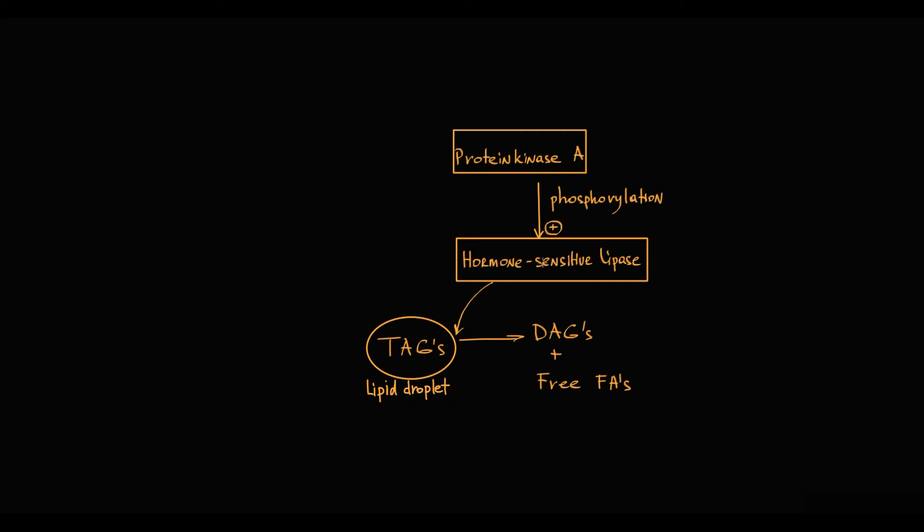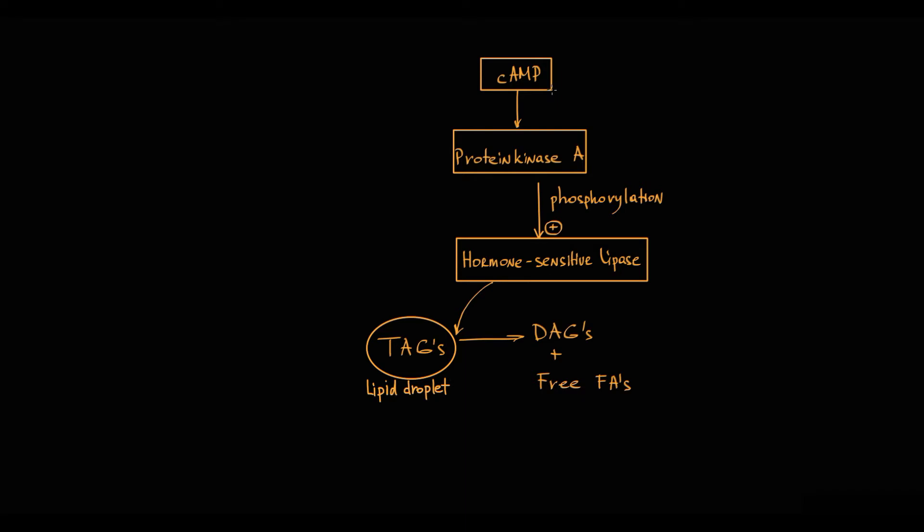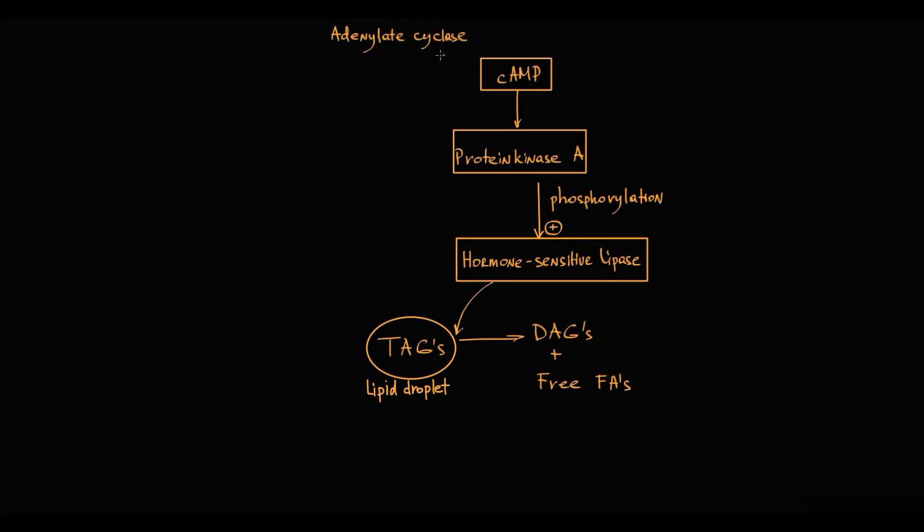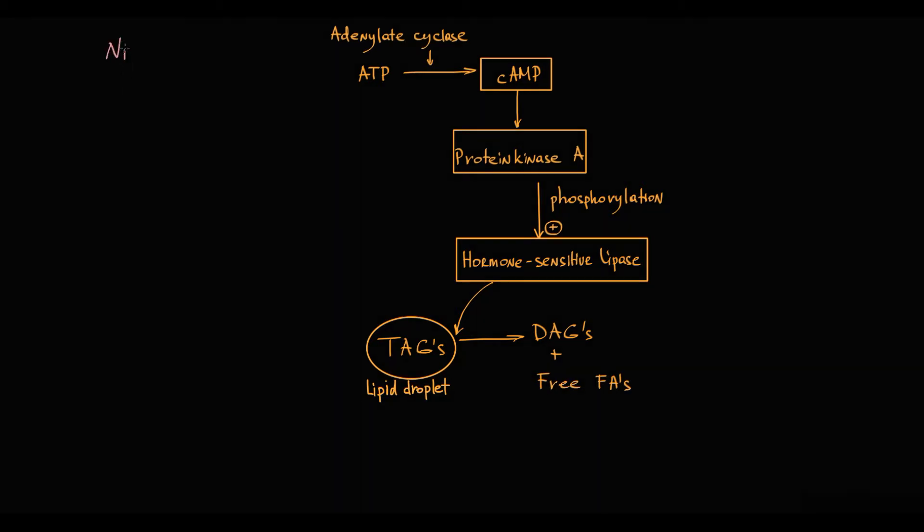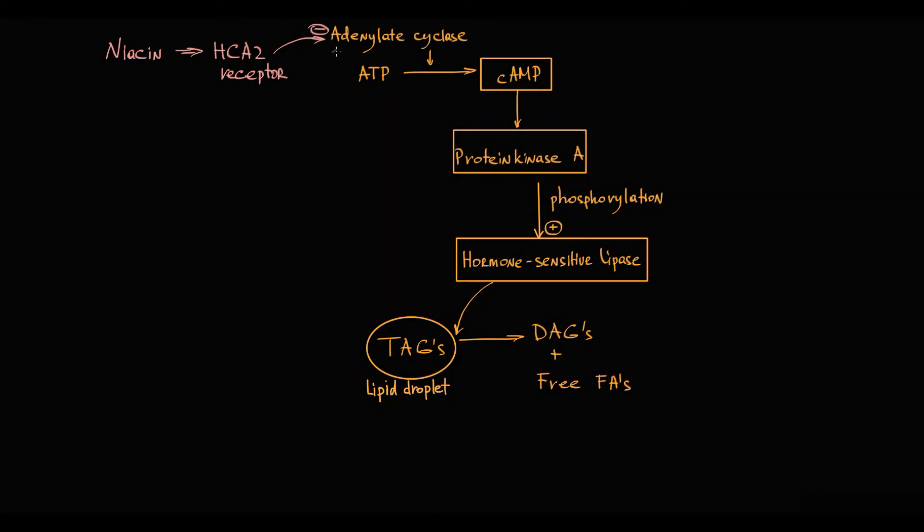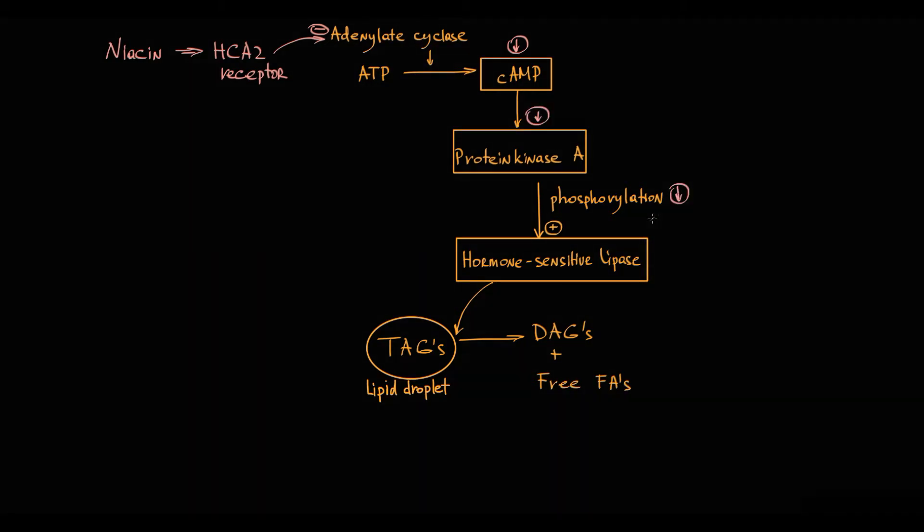Protein kinase A is called cyclic AMP-dependent kinase because its activity depends on cyclic AMP concentrations in the cytosol. Cyclic AMP molecules are produced by adenylate cyclase that converts ATP into cyclic AMP. When niacin binds to HCA2 receptor on adipocytes, it triggers activation of the receptor-associated G-inhibitory protein that inhibits adenylate cyclase activity. With decreasing cyclic AMP, protein kinase A activity decreases, thereby phosphorylation of hormone-sensitive lipase decreases. In unphosphorylated state, hormone-sensitive lipase activity is very low, so hydrolyzation rate decreases and the release of free fatty acids into circulation decreases.